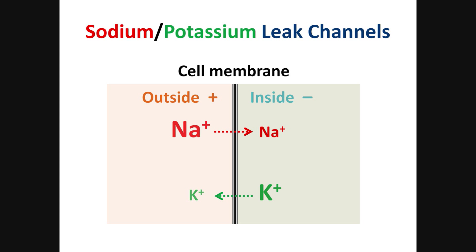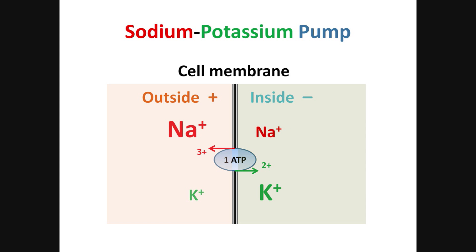This movement is shown by the arrows from high level to low. The leakage is small but continuous and it can change concentrations over time. Imagine a boat with a leak — what do you do to keep it afloat? You need to pump the water out. It is the same with ions. There are so-called sodium-potassium pumps in the membrane — proteins that move sodium out and potassium in from low level to high. This is active transport and it requires ATP for energy.